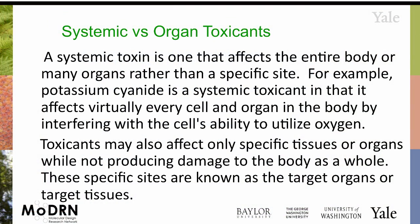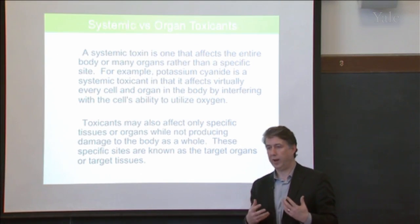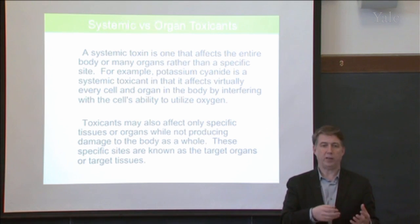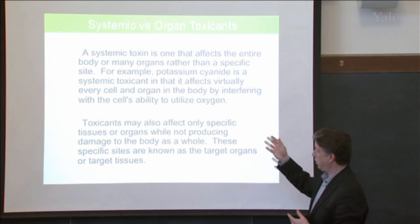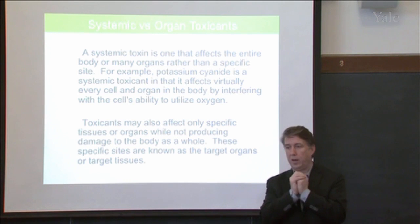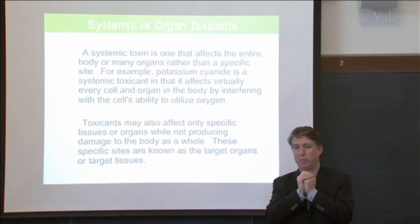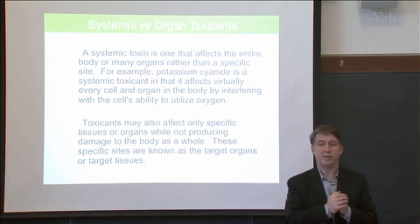When we look at systemic toxicants versus other toxicants, a systemic toxicant is one that's going to affect the entirety of your body. When you think about something like potassium cyanide, that is going to affect a cell's ability to absorb and utilize oxygen. That's going to be something that's not unique to any particular organ, but is going to be a systemic effect.